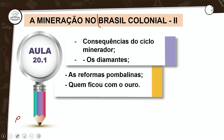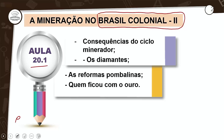A história do Brasil é muito mais interessante, não é isso? Quando chega no segundo ano, porque no primeiro ano é só história europeia, história geral. Na aula de hoje, na aula 20.1, nós veremos as consequências do ciclo minerador, também sobre os diamantes, as reformas pombalinas. E quem ficou com o ouro? Quem ficou com o ouro que foi extraído do Brasil?